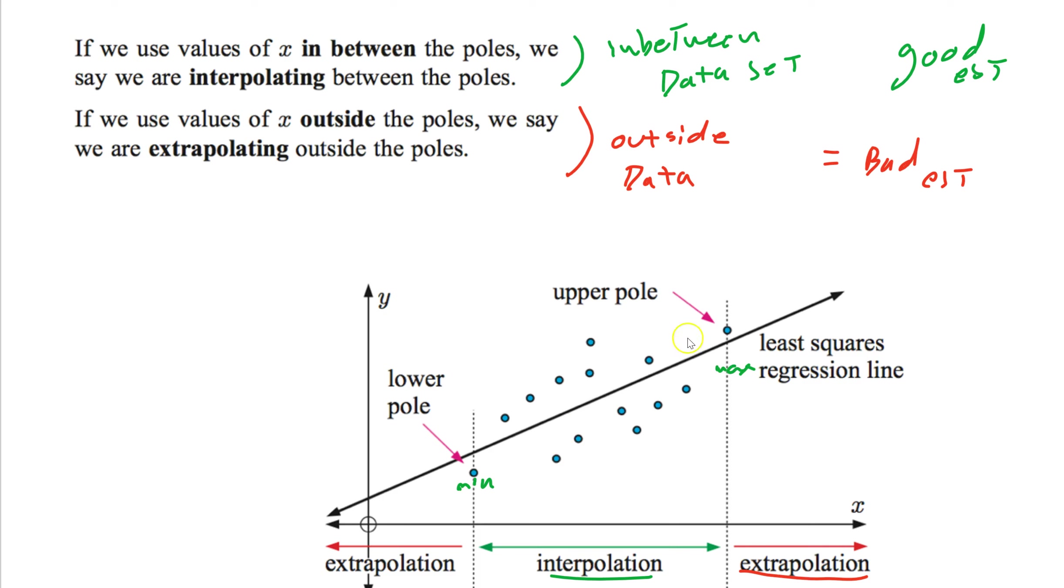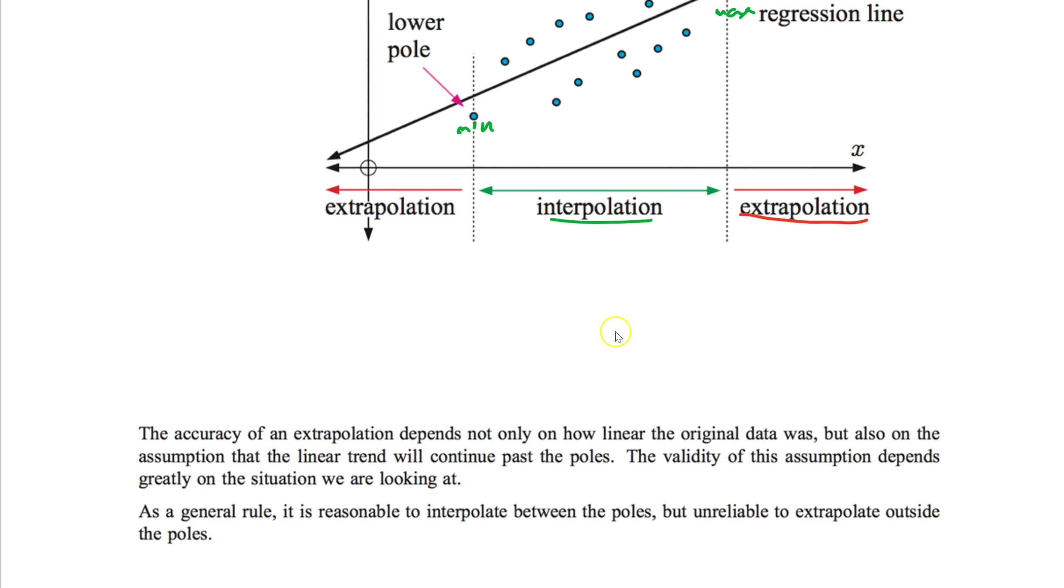So interpolation is when it falls in between your data set. Good estimate. Extrapolation is when it falls outside your normal data set. It's a little too high or a little too low. Then generally not going to be a very good guess. And that's what you can see right here. As a general rule. Interpolation between the poles is good. It's reasonable. Outside the poles. Extrapolation is unreasonable.